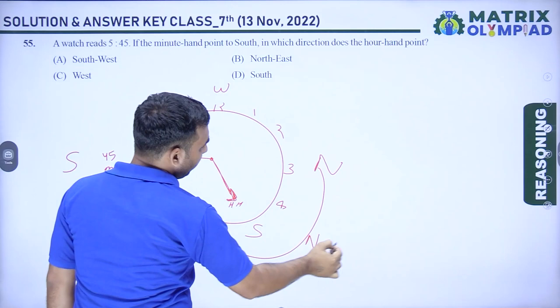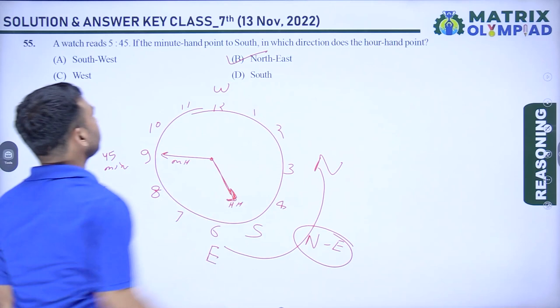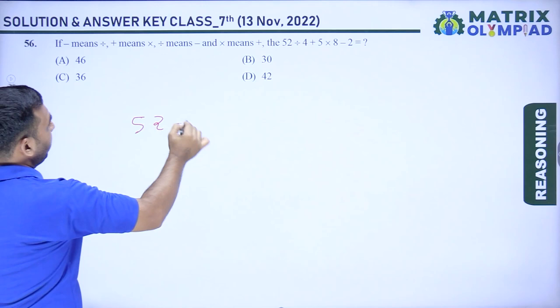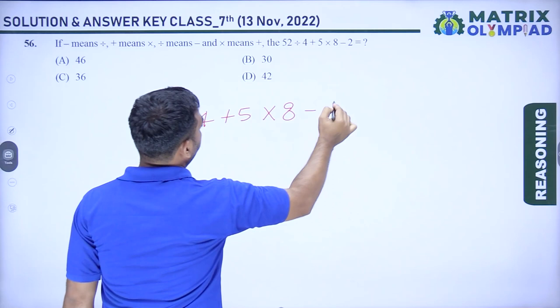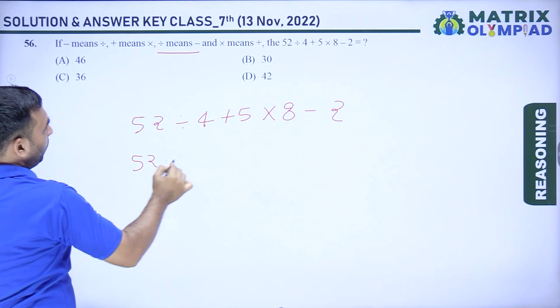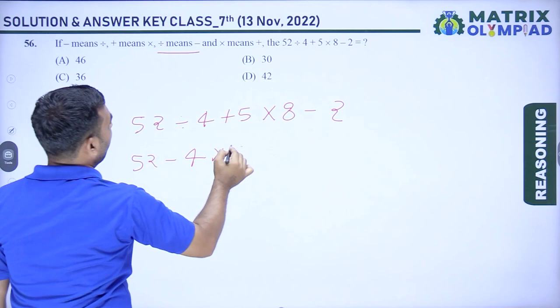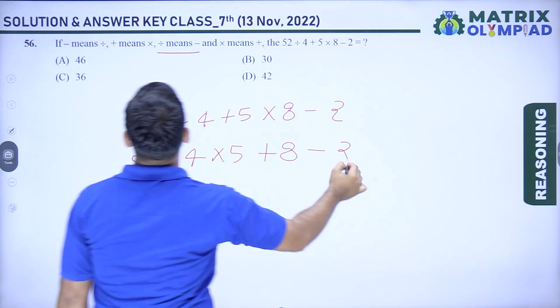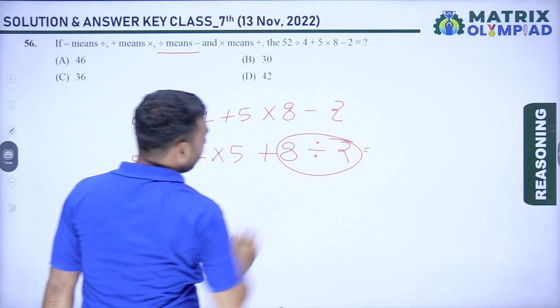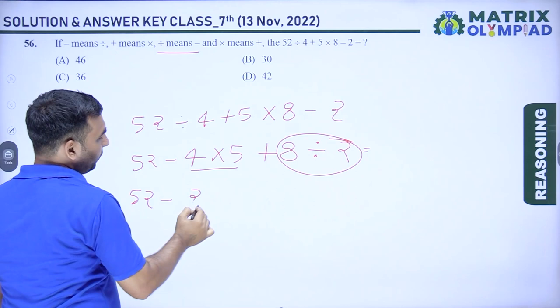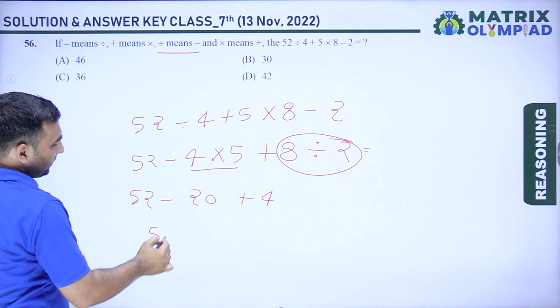Question 56: 52 ÷ 4 + 5 × 8 − 2 with substituted operations (÷ means −, + means ×, × means +, − means ÷). Rewriting: 52 − 4 × 5 + 8 ÷ 2 = 52 − 20 + 4 = 36. Option C is correct.